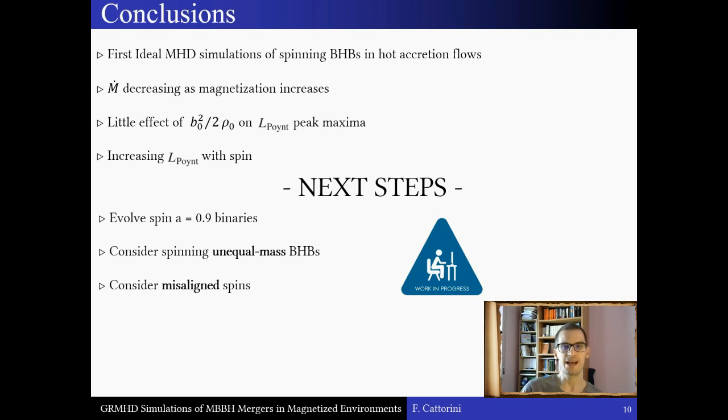So, my next steps are completing the evolution of the binaries of spinning black holes with a dimensional spin of 0.9, and I'm considering to evolve binaries of spinning unequal mass black holes. And finally, I'm also considering to evolve binaries of spinning black holes with misaligned spins.